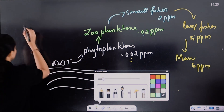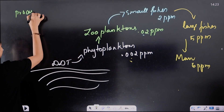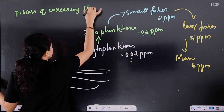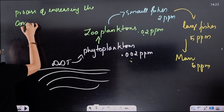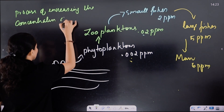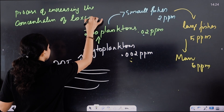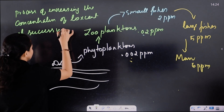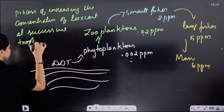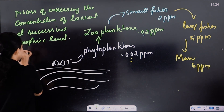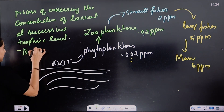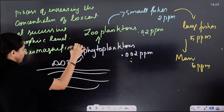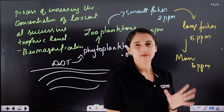So, what is biological magnification? It is the process of increasing the concentration of toxicant at successive trophic levels. This is also called biomagnification. It is an important and very simple process.